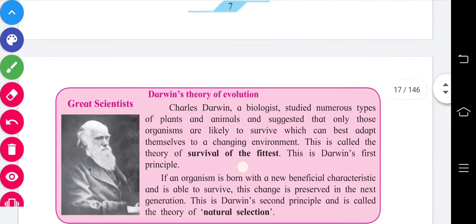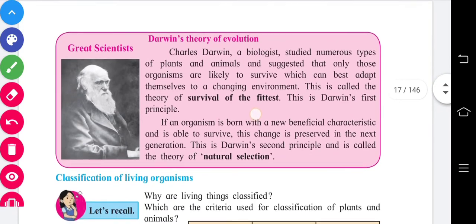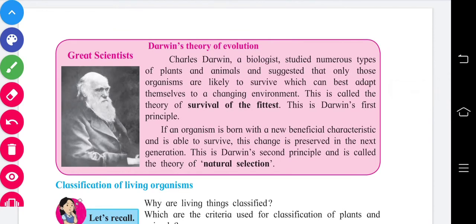Next is Darwin's theory of evolution. Charles Darwin was a great biologist who studied numerous types of plants and animals for several years. He suggested that only those organisms are likely to survive which can best adapt themselves to a changing environment. This is called the theory of survival of the fittest — Darwin's first principle.